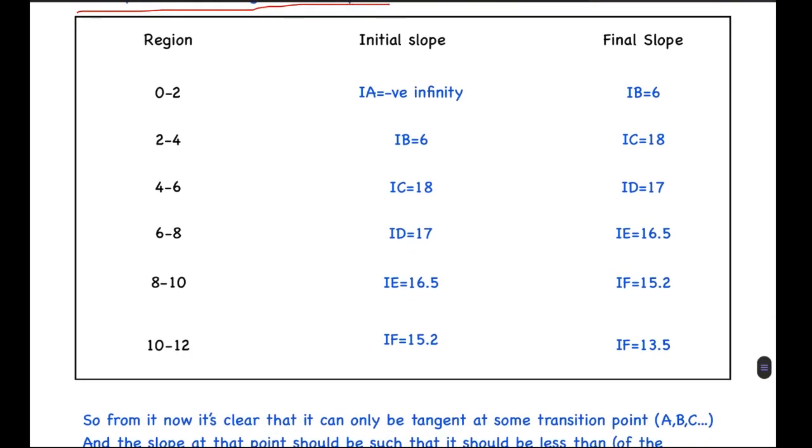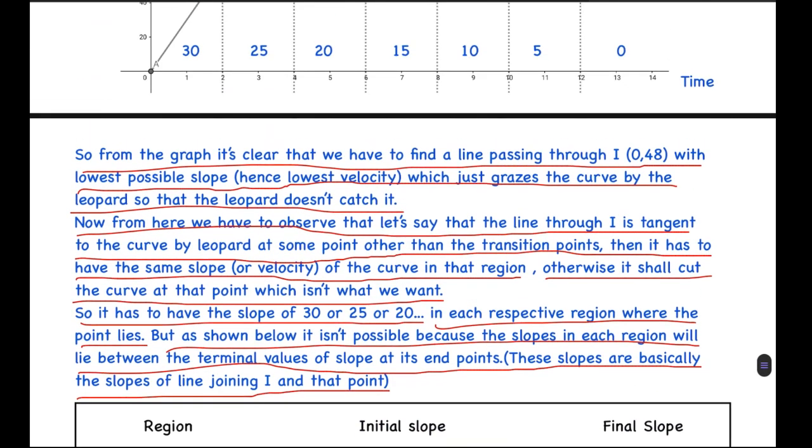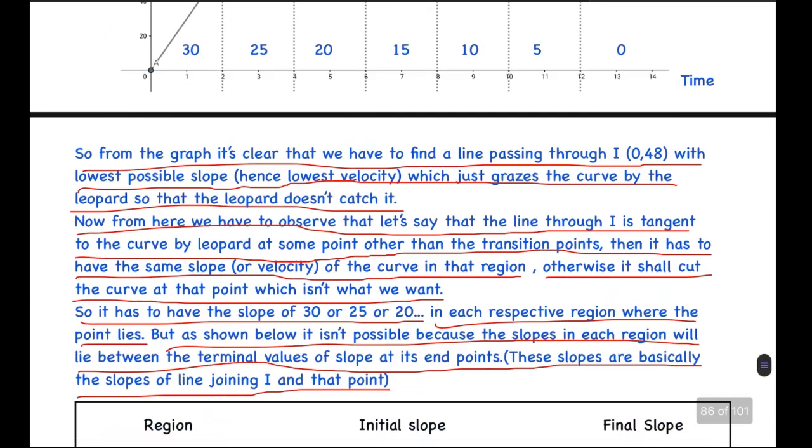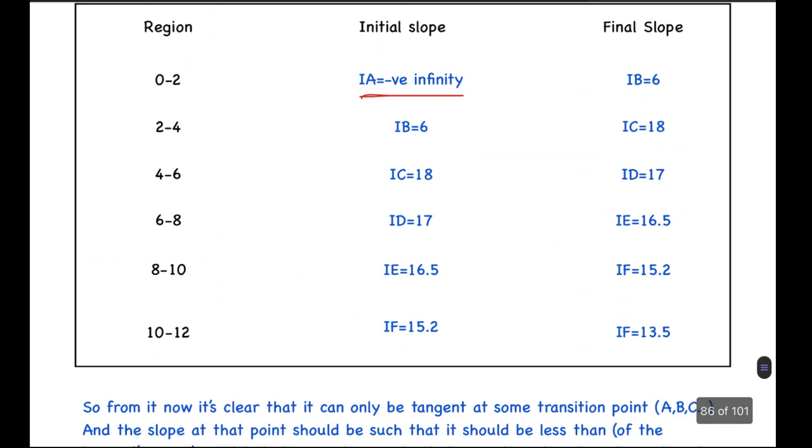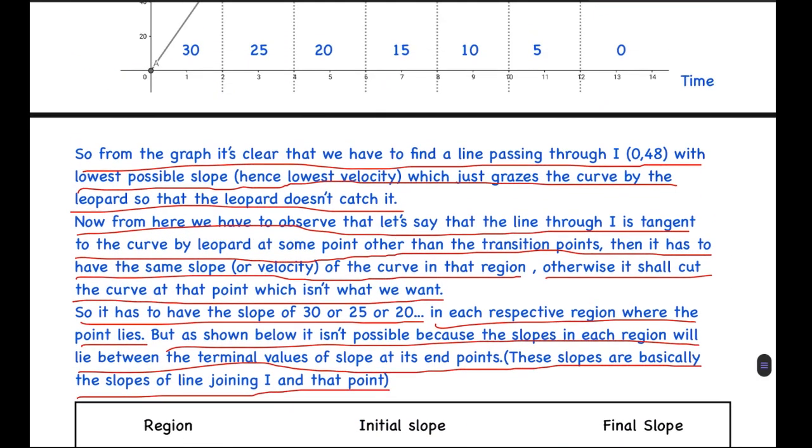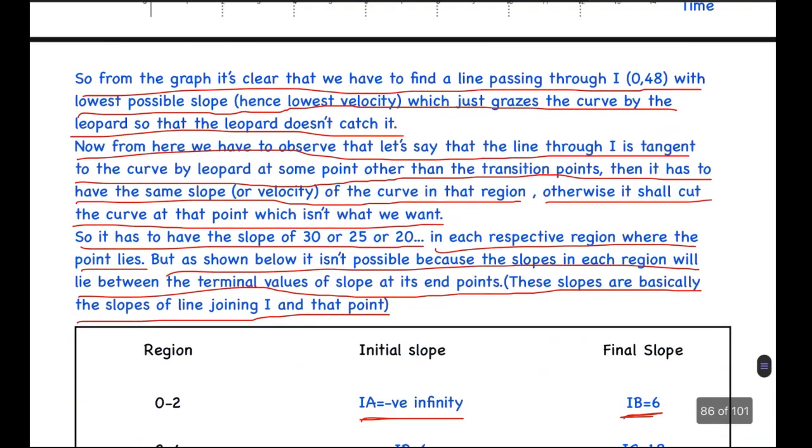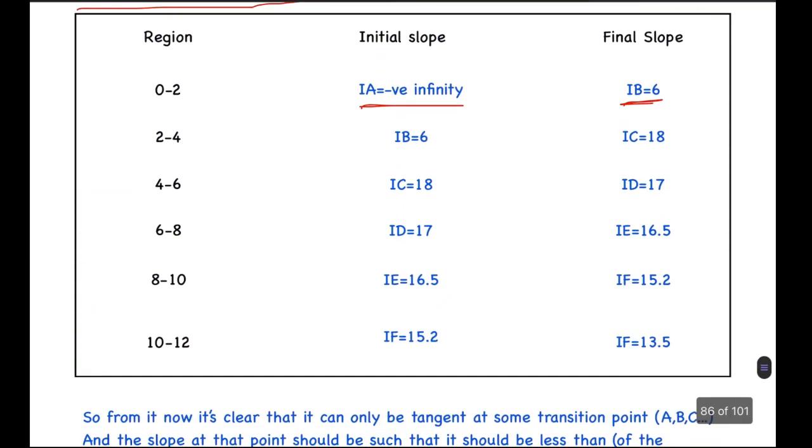So basically, in the region (0,2), the initial slope, which is of IA, which is this point IA, is minus infinity obviously. And the final slope of it is IB, which is this line. So basically, all the lines in this region will have slopes between these two terminal values, as it is going along a straight line. So it has to have a slope between minus infinity to 6. And in 2 to 4, the slope lies between 6 to 18.